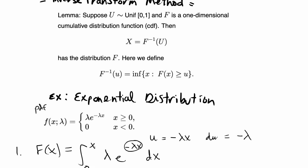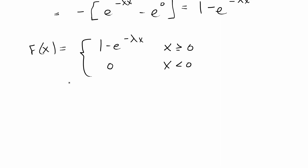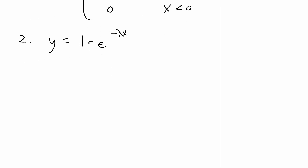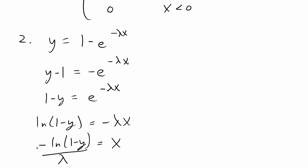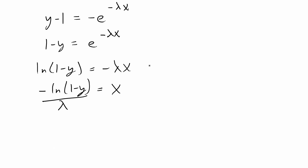Once we have the CDF that we want — that's going to be our f — the next thing we have to do is find the inverse CDF. F inverse is what we're going to try to find next. For step 2, I'm going to say that f of x is equal to y, and y is equal to 1 minus e to the negative lambda x. To solve for the inverse, this is just like an algebra problem so I'm basically going to solve for x.